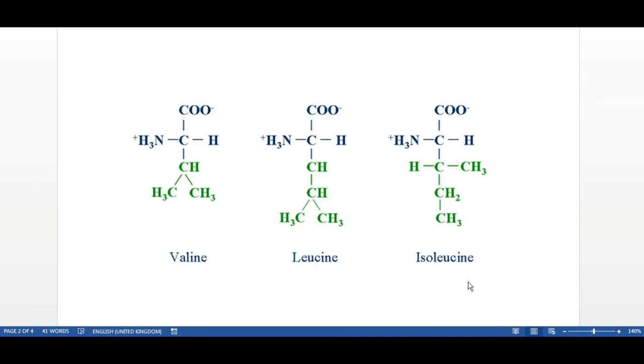Of the nine essential amino acids that I showed you, there are three which are classified as branched chain amino acids. And these are the three most potent when it comes to building muscle. You have valine, leucine and isoleucine. The king of muscle building is leucine right here.